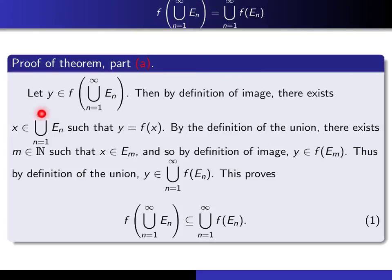But to say that X lies in the union is to say that it lies in at least one of them. So that means there exists an index M such that X is in E sub M. And since X is in E sub M and Y is F of X, that means that Y is in the image of E sub M. And if Y is in the image, is in this particular set, then it must be in the union of all such sets, because it's in at least one of them. And therefore, I've proven that this is a subset of this.